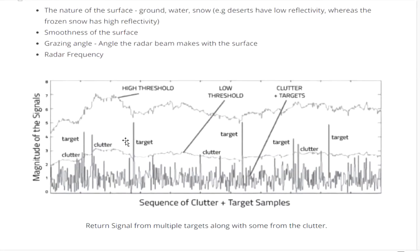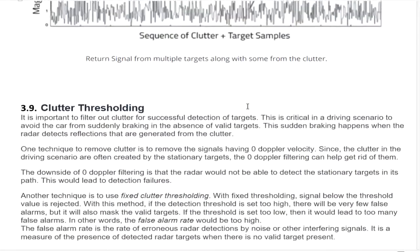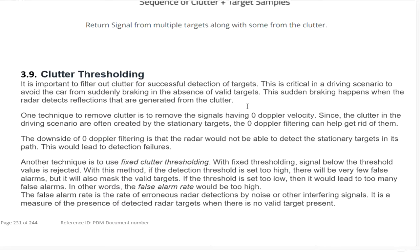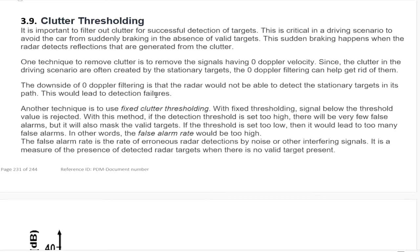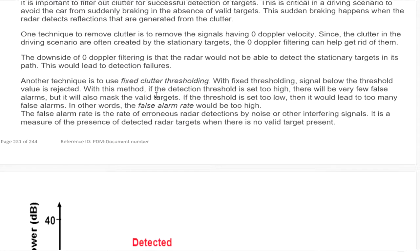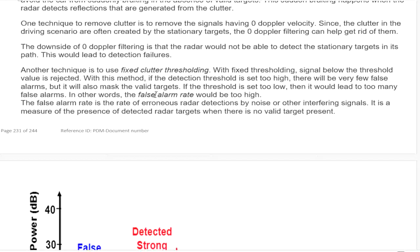We should have a threshold value to filter out all the clutter in order to get only the target signal. One technique to remove clutter is to remove signals that have zero Doppler velocity, because clutter in a driving scenario is often created by stationary targets. So zero Doppler filtering can help get rid of them. However, the downside is that the radar would not be able to detect stationary targets in its path, which would lead to detection failures.